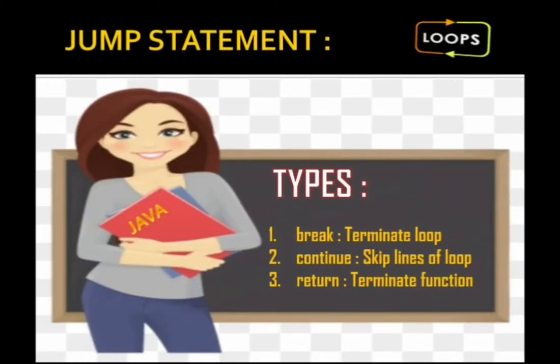There are different types of jump statements in Java. First is break, which is used for termination of a loop. Continue, as the name indicates, continues the loop again by skipping a few lines. Return is used to terminate functions. When dealing with functions, we use return for termination, but in loops we use break and continue.